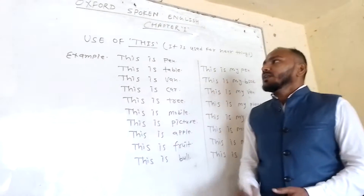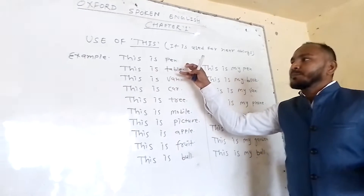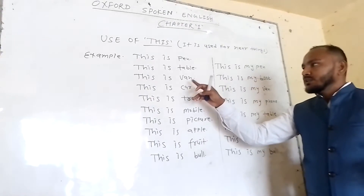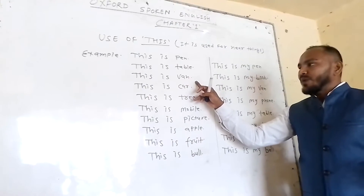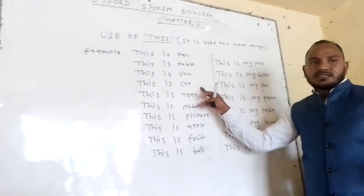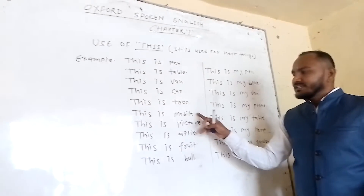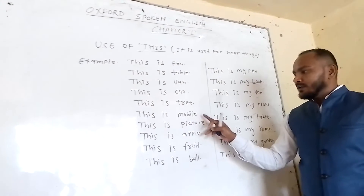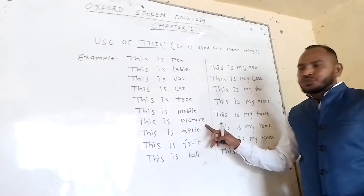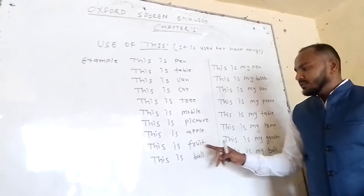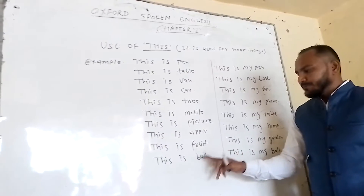For example: this is a pen, this is a stable, this is a van, this is a car, this is a tree, this is a mobile, this is a picture, this is an apple, this is a fruit.